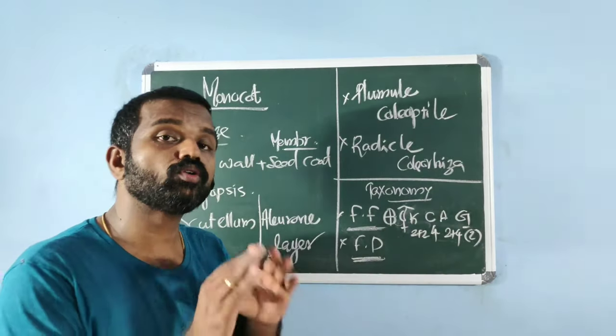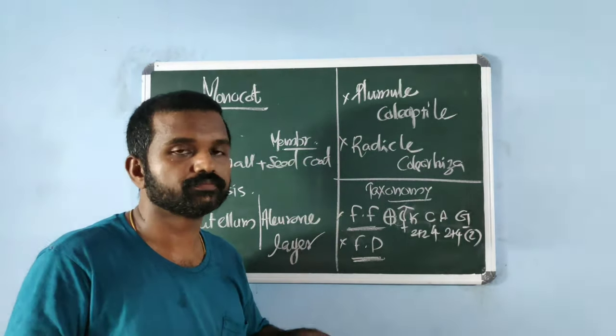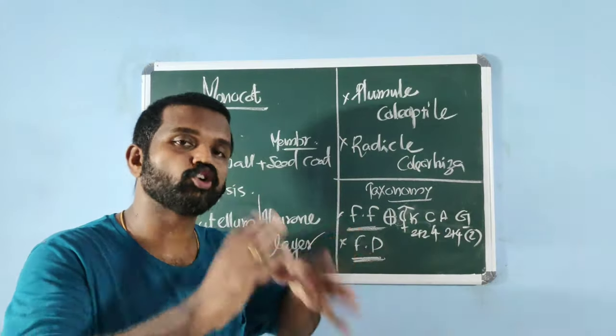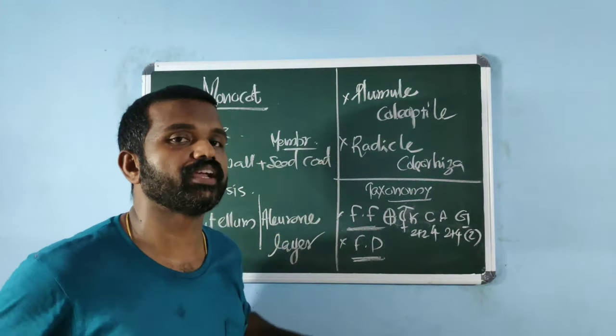Monocot seeds are usually endospermous — meaning the endosperm is present in the mature seed.